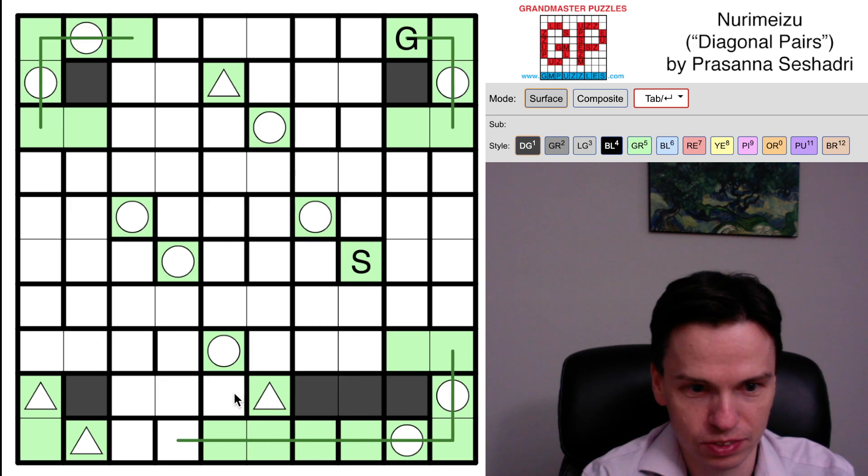To avoid a 2x2 square, this is shaded, this is shaded, this is unshaded. I still have to make this be part of a valid maze, so this has to come up, but not come through this triangle, which is part of an end.